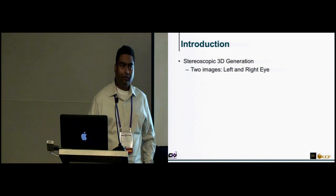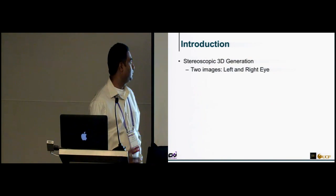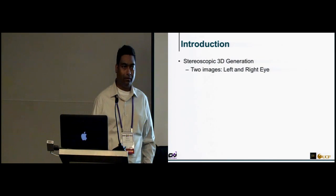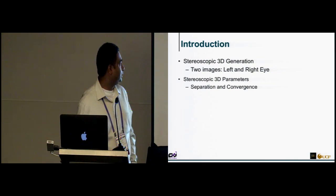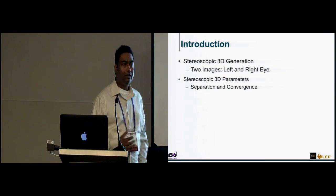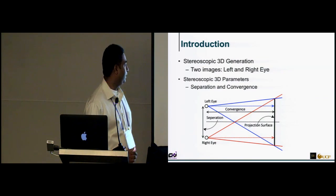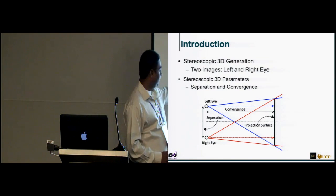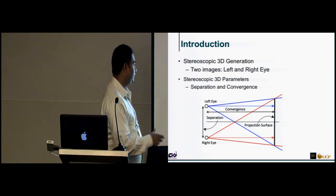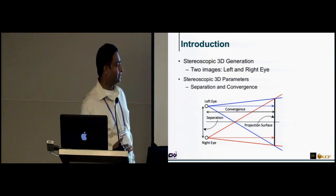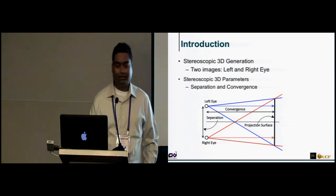Generation of stereoscopic 3D requires two images, one for the left eye and one for the right eye. To generate these images, convergence and separation are very important parameters. Separation is defined as the distance between the left and right eye virtual cameras, and convergence is the distance where the left eye and right eye camera frustums intersect.